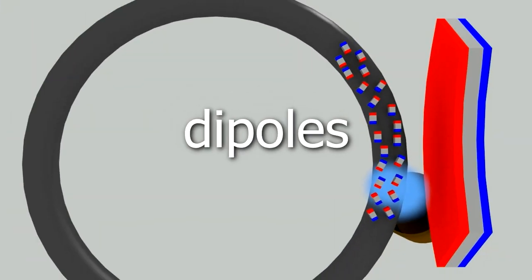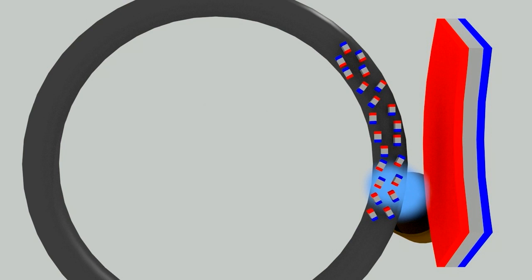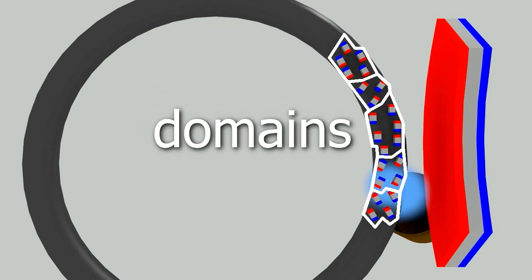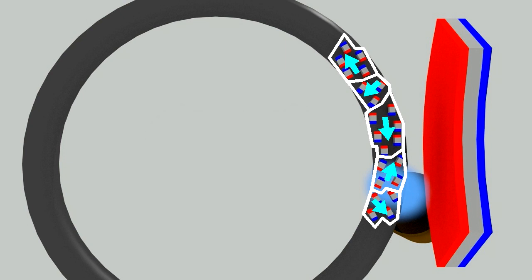Another term for these tiny magnets is dipoles. In nickel, these tiny magnets are grouped into domains. Each domain is a group of tiny magnets, all pointing in the same direction. But notice that the magnets of different domains point in different directions. That's why nickel doesn't normally act like a magnet.